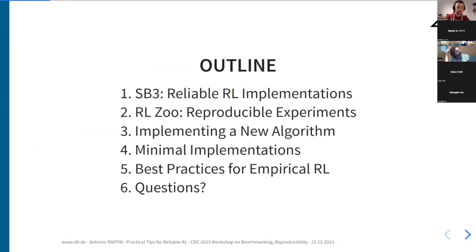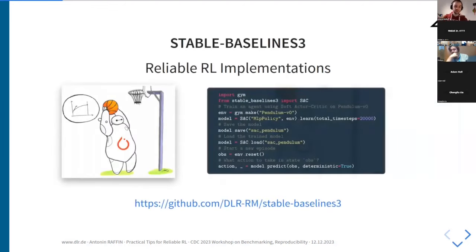That's why I spent quite some time trying to have reliable implementations. The outline for today: I'll present how we manage to have reliable implementations using Stable Baselines 3, then talk about the RL Zoo for reproducible experiments. Everything I'm presenting uses RL as an example, but it should be applicable to any empirical science. Stable Baselines 3 is a set of reliable reinforcement learning implementations providing many algorithms through an easy-to-use API.